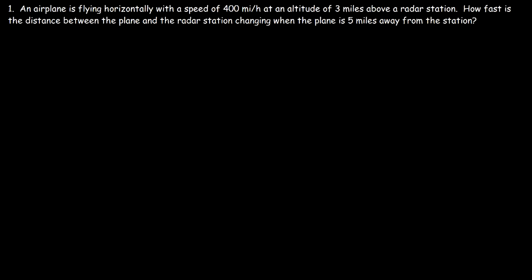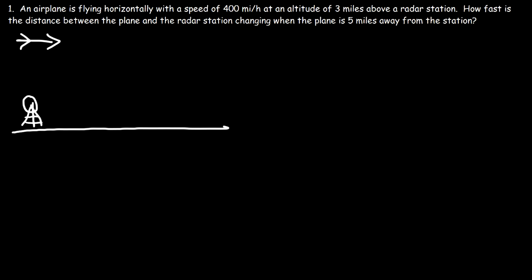Let's focus on some airplane problems as they relate to related rates. An airplane is flying horizontally with a speed of 400 miles per hour at an altitude of 3 miles above a radar station. Let's draw a picture — this is the ground, this is the radar station, and this is the airplane traveling horizontally.